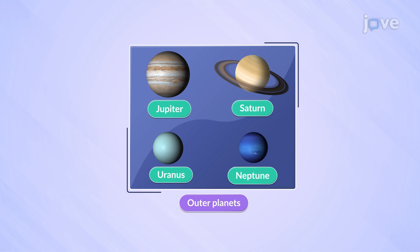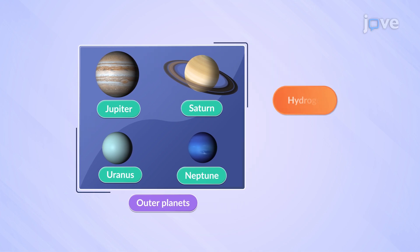These planets are huge and mostly made of gases, like hydrogen and helium. They are also known as gas giants.